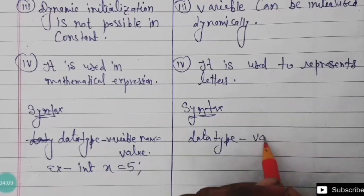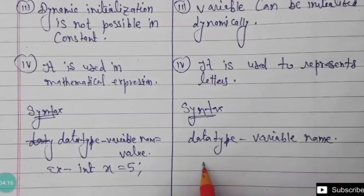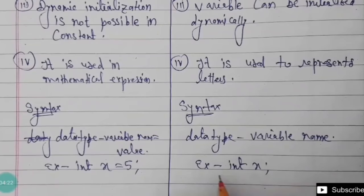Similarly, the syntax of a variable in programming language is: data type, variable name. For example: int x. This is the main difference between constant and variable — a very important topic for examination.